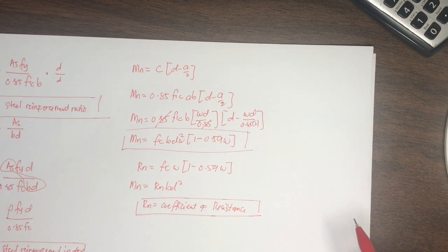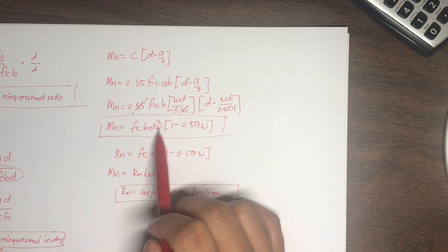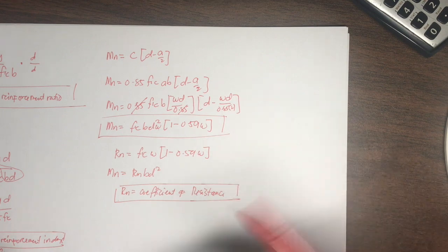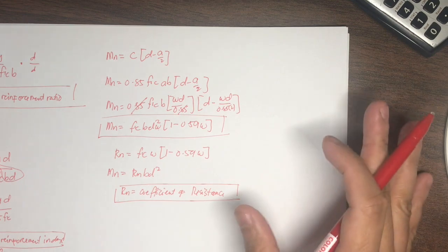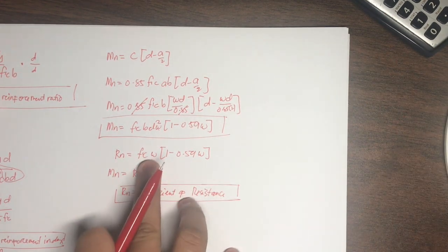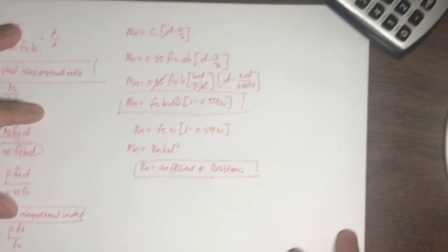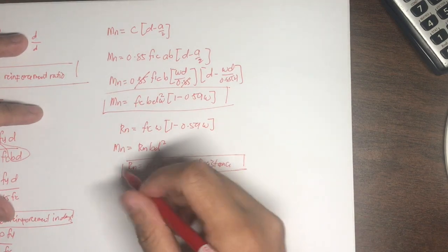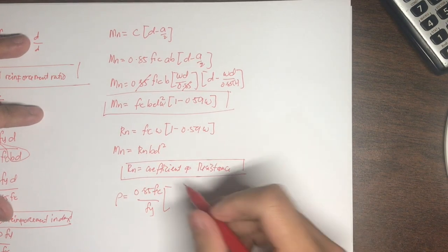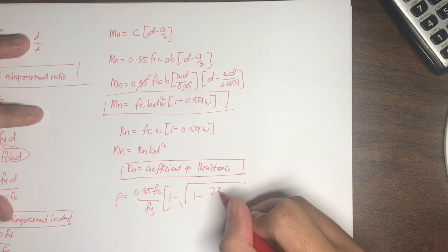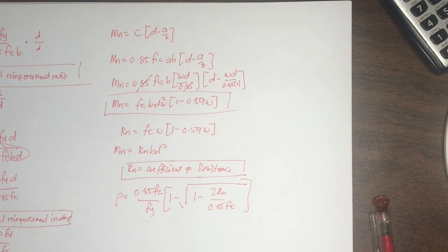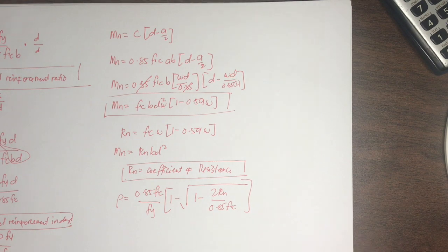Distributing the RN expression yields a quadratic equation in omega. Using the quadratic formula, and recalling that omega equals rho·Fy/fc', we can express rho in terms of RN as: rho equals (0.85·fc'/Fy) times (1 minus the square root of (1 minus 2·RN/(0.85·fc'))). This formula applies only for singly reinforced beams.